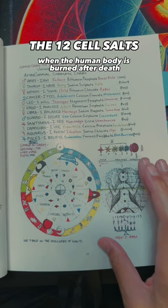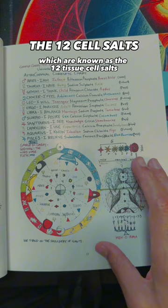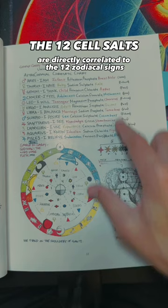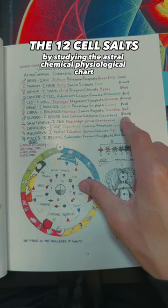When the human body is burned after death, there are 12 minerals found in the remaining ashes, which are known as the 12 tissue cell salts. These 12 salts are directly correlated to the 12 zodiacal signs and specific parts of the human body from head to feet, and this can be learned by studying the astral chemical physiological chart.